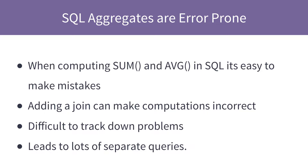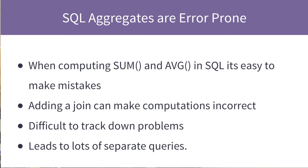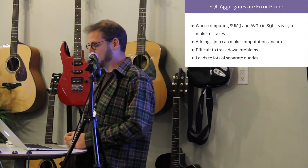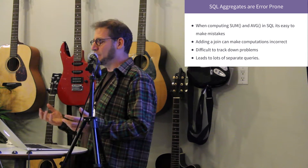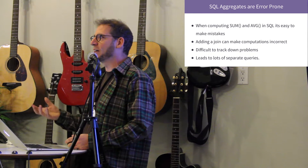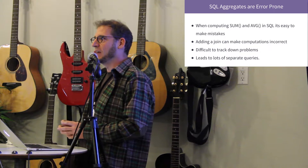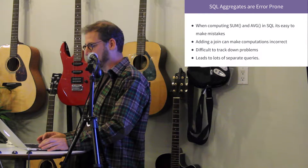In SQL, when you compute a sum or an average, you have to be computing it against the base table in the FROM statement. That means if you write a query to compute something against the orders table, the only aggregates you can compute are the ones in orders. If you try to compute an aggregate from something else, it's going to be wrong. This very much directs the way that you write SQL, and it also makes it really easy to make mistakes — you can write a query, add a join in, and all of a sudden your query no longer works.